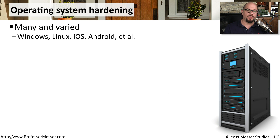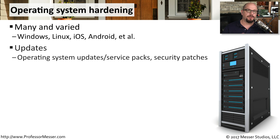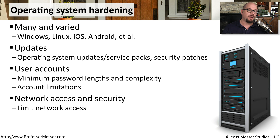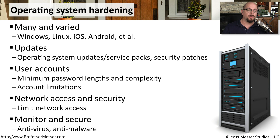Another important piece of technology to harden would be our operating systems. This might be Windows, Linux, Mac OS, iOS, Android, or any other type of operating system that we might be using and connecting to the network. After your initial setup, the next step is usually to make sure that you're updated to the latest version — there might be service packs or patches that need to be applied. If there are user accounts configured on this operating system, you want to be sure they're using best practices for password length and complexity, and that those accounts are limited to provide just enough capabilities for what that user needs. You also want to check network access, set up proper restrictions, and provide ongoing monitoring, antivirus, anti-malware, and other security controls as well.